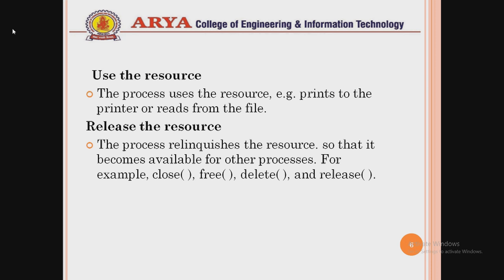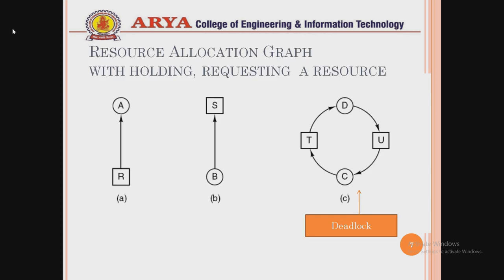The second event is use — the process uses the resource; for example, a printer is used to print a file. The third event is release — the process releases the resource so it becomes available for another process. Examples of release functions include close, free, delete, and release.